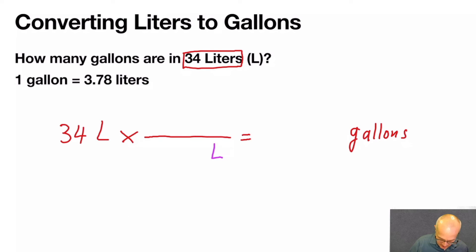Liters are written on the bottom, so they'll cancel. Liters and liters, that way you can do this. On top, in the numerator, is always the unit you want, which is gallons. Gallons are here, and gallons are here. That way they don't cancel.